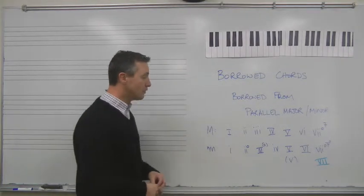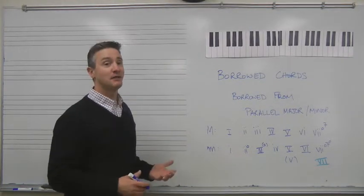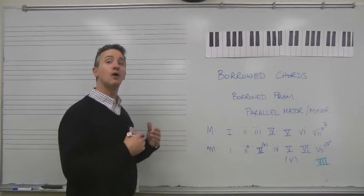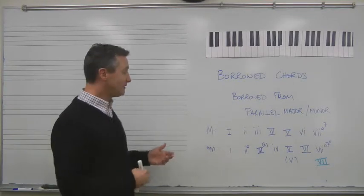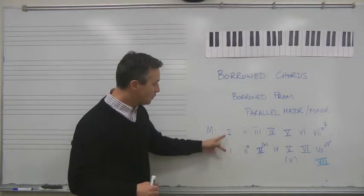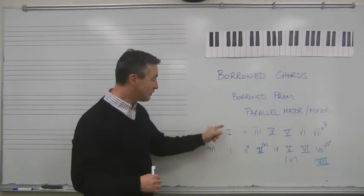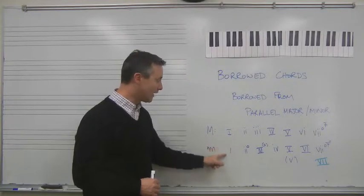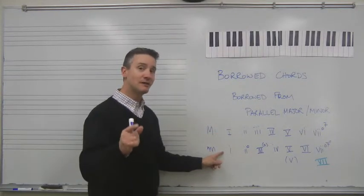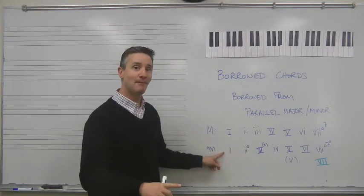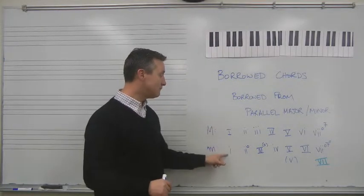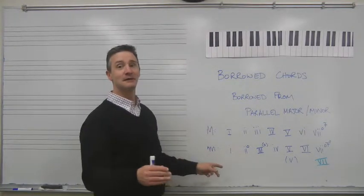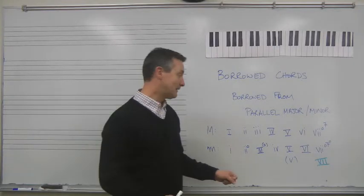So the way borrowing works is if you already have something, you don't need to borrow it. If what you are trying to borrow, one assumes, is something different from what you have. The I chords are different from each other, so indeed there can be some borrowing back and forth. Ask me in class about a great example of borrowing a I chord from major in minor at the end of a piece.